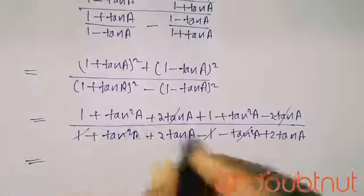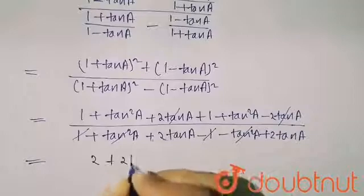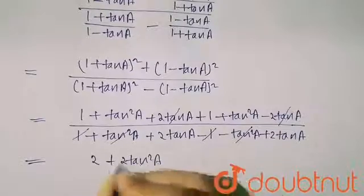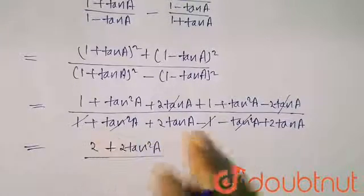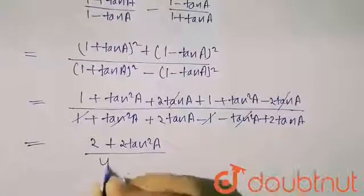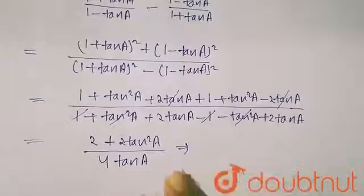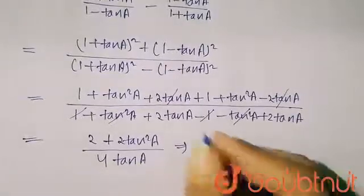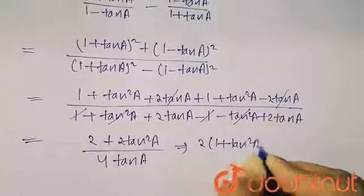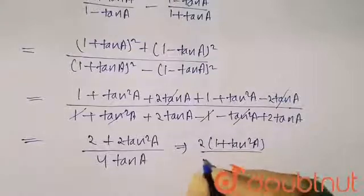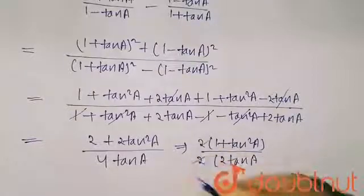So here in the numerator I get 2 + 2 tan²a, and in the denominator I get 4 tan a. Taking 2 as common from the numerator, I get 2(1 + tan²a) upon 4 tan a, and the 2 and 2 cancel, giving (1 + tan²a) upon 2 tan a.